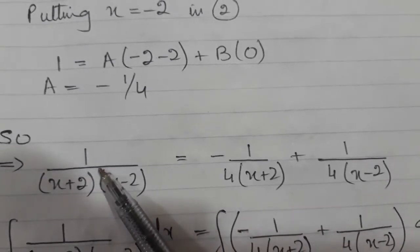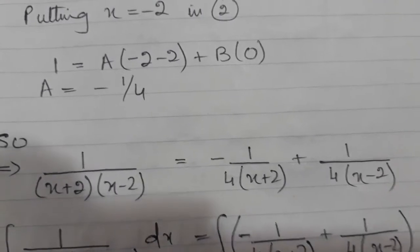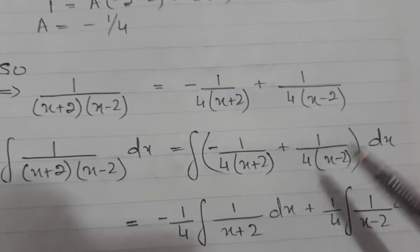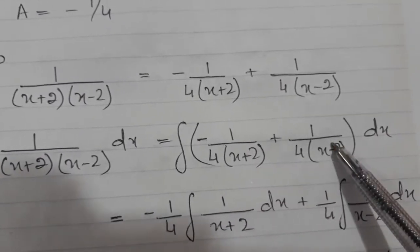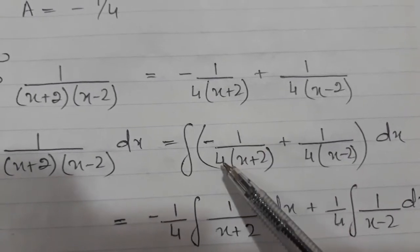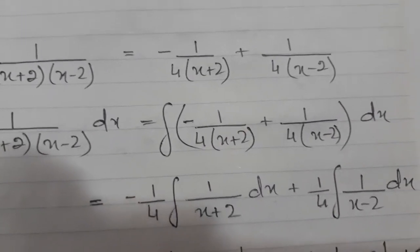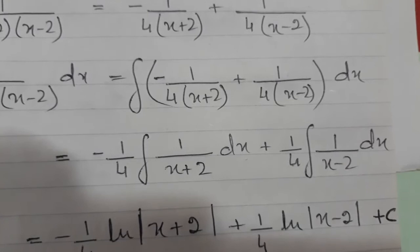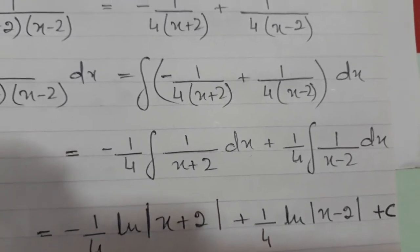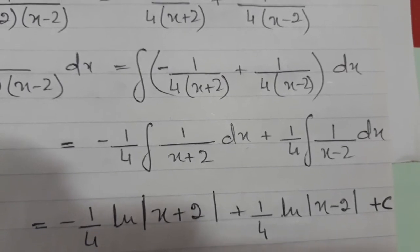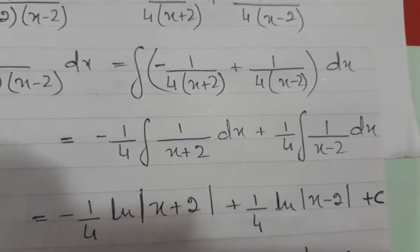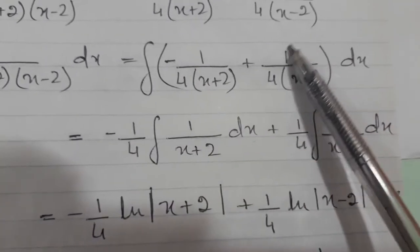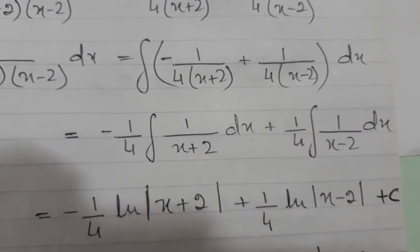If I have to integrate this function, I will basically integrate these two terms. Instead of this, now I am writing this. Minus 1 over 4 I am taking out. I am showing that I am applying integration on individual terms. You can do it directly also, but my experience is children usually get confused. Whatever way they are comfortable with, they can. After taking minus 1 over 4 out and from here 1 over 4 out, I have two terms of integration here.